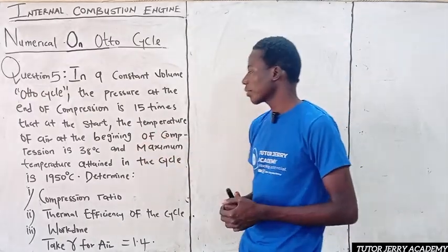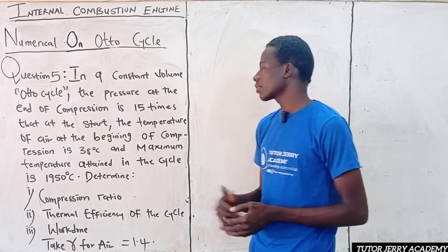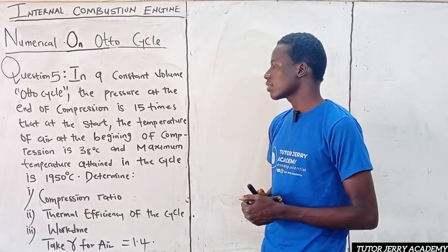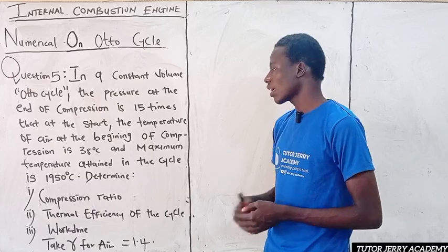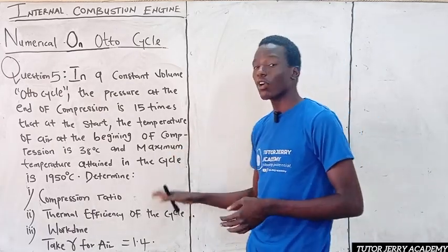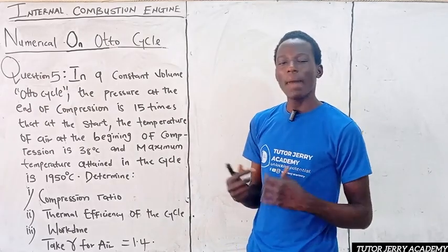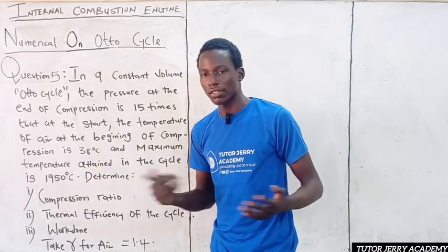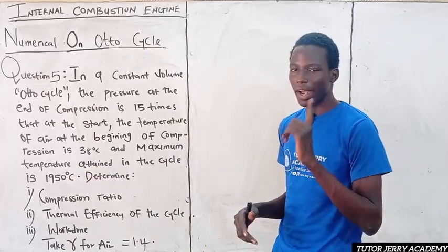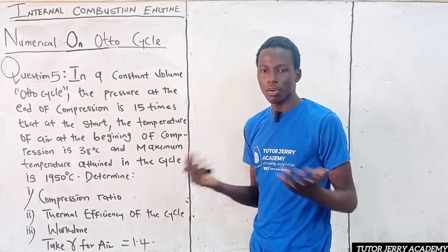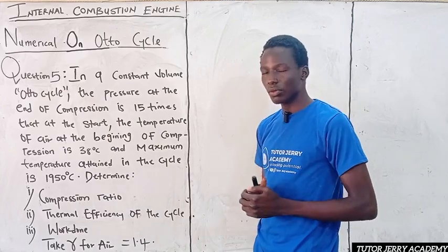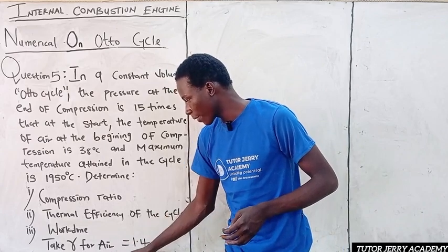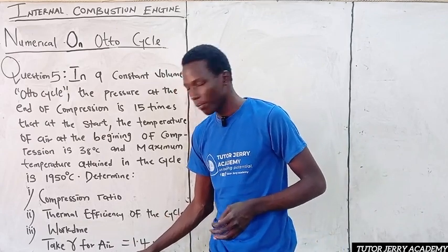Secondly, we are told that the temperature of air at the beginning of compression is 38 degrees Celsius, which means T1 equals 38 degrees Celsius. The maximum temperature attained in the cycle — for an Otto cycle, the maximum temperature is T3 — so T3 is 1950 degrees Celsius. We are asked to determine three things: the compression ratio, the thermal efficiency of the cycle, and the work done.